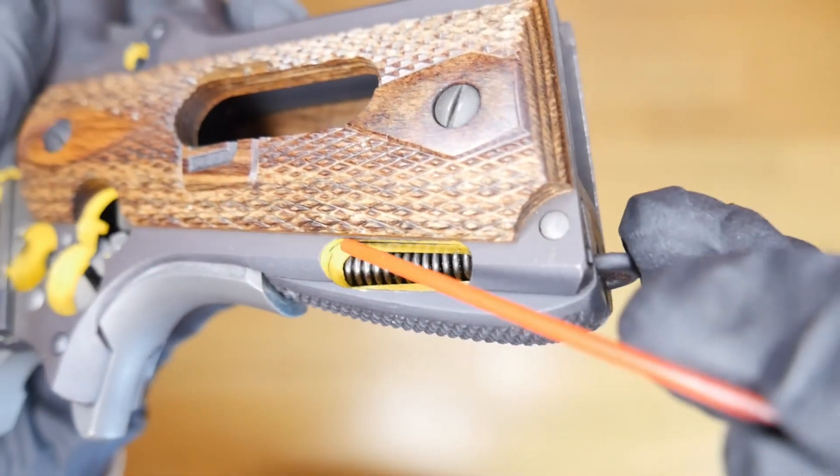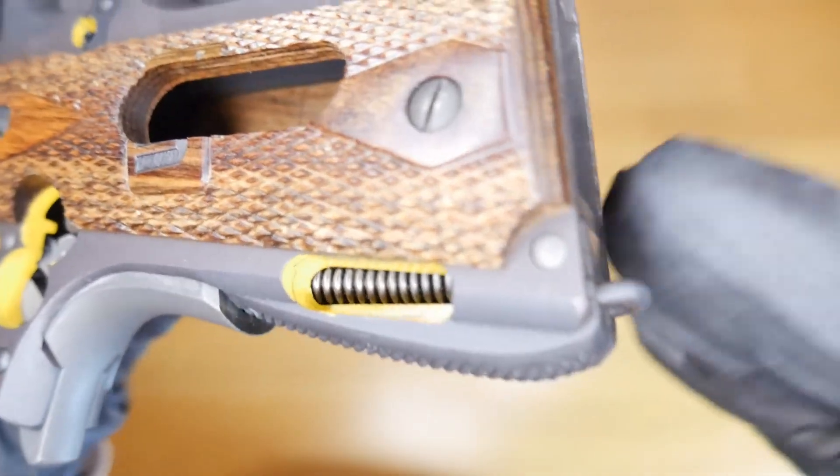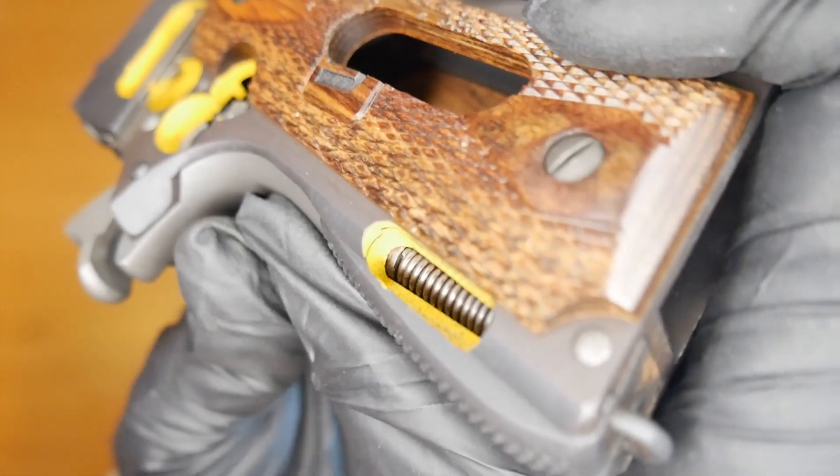Now check out this cut. It goes through both the mainspring housing and the frame, so you can see the tensioning and release of the mainspring itself.